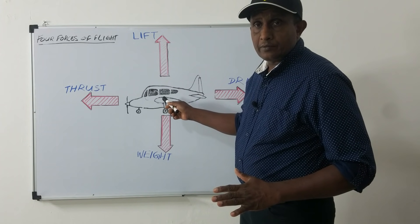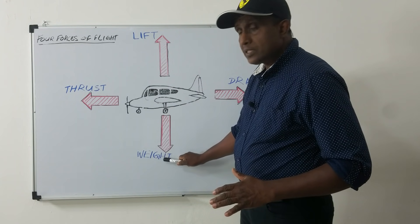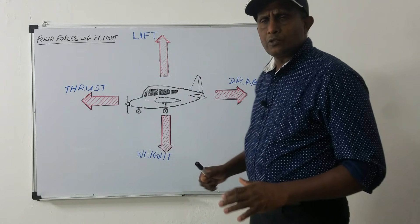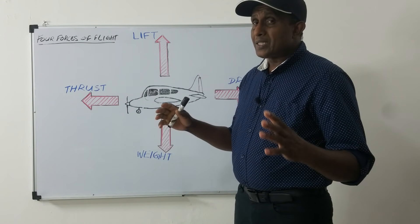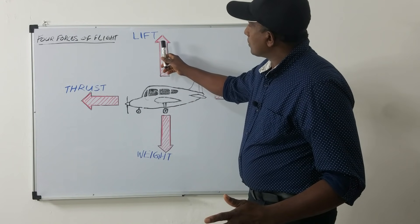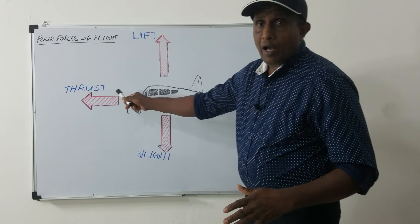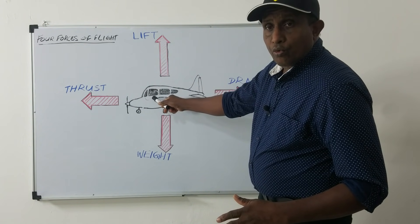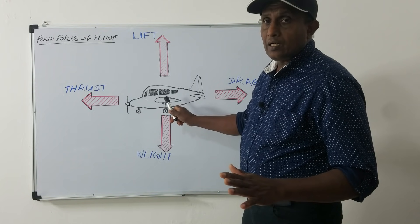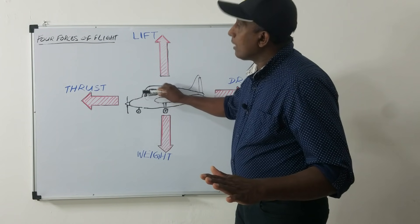There are four forces acting on an airplane: lift, weight, thrust, and drag. Lift is the upward force created by the effect of airflow as it passes over and under the wings. Lift supports the airplane in flight.